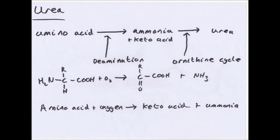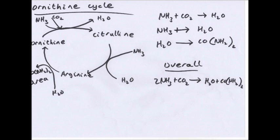In the ornithine cycle, a molecule of ammonia plus CO2 releases water and forms citrulline. Another NH3 joins in, releases another water molecule, and forms arginine. That water molecule is reused with arginine to produce urea, and ornithine is regenerated. Looking at the overall equation: two molecules of NH3 and one molecule of CO2 on the left-hand side; two molecules of water and one molecule of urea on the right. Two of those water molecules cancel out as they are reused, leaving one H2O. So overall: 2NH3 + CO2 → H2O + urea (CH2N2O).